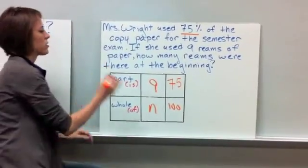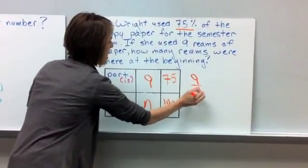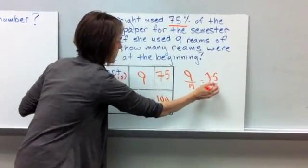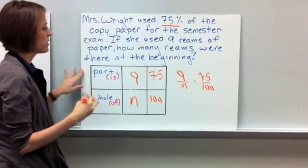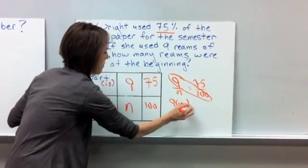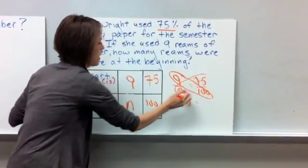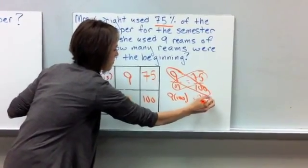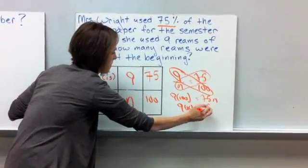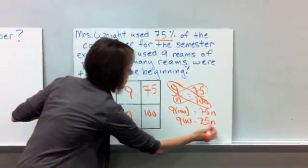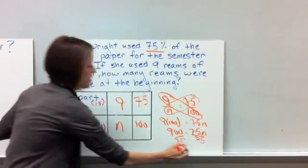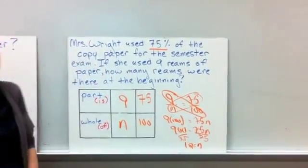So that would be 9 over N is equal to 75 over 100. And then again, just like every other time we've done this, you're going to cross-multiply and divide. So 9 times 100 is equal to N times 75. And then 9 times 100 is 900. And then our last step is to divide by 75. And our final answer is going to be N is equal to 12.